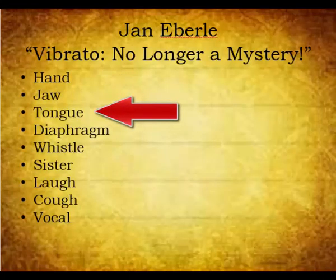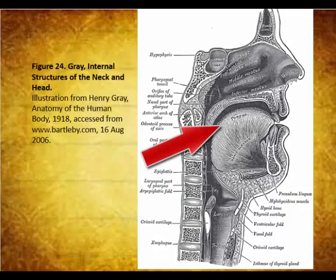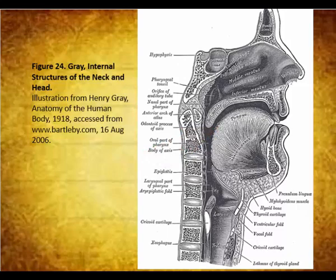Professor Eberle indicates that tongue vibrato occurs in the region of the tongue near the soft palate. Saying yo-yo-yo-yo-yo rapidly approximates this tongue vibrato. I do not recommend this type of vibrato, as the tongue already has enough to do with articulation and tuning by means of vowels.